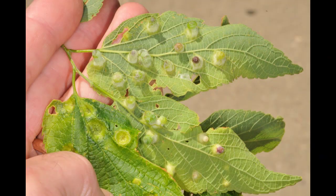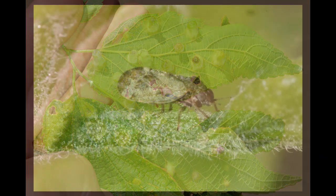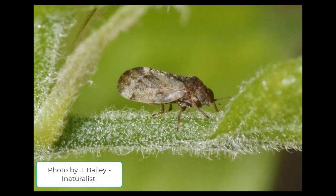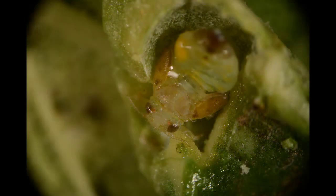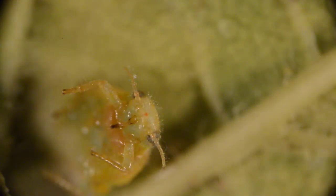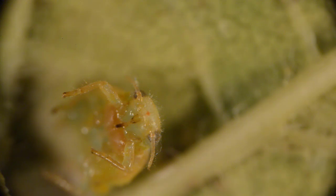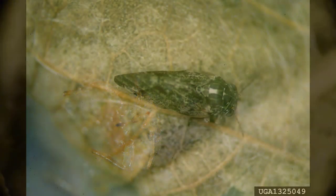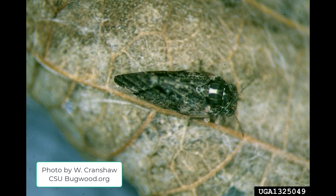The hackberry nipple gall is caused by a sucking insect called a psyllid. Adults lay eggs in leaves in the spring that hatch into nymphs, which become encased in the gall. This insect continues to feed with its sucking mouthparts all summer until it becomes an adult in autumn that exits the gall to overwinter in the bark, cracks, and crevices.